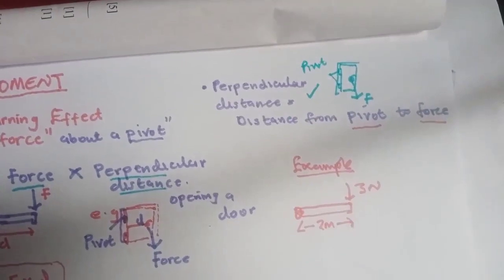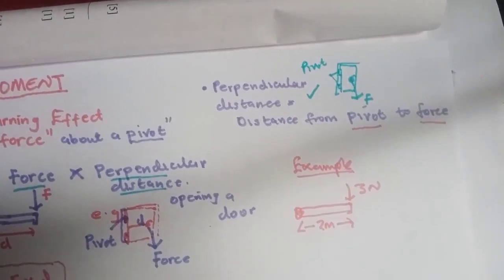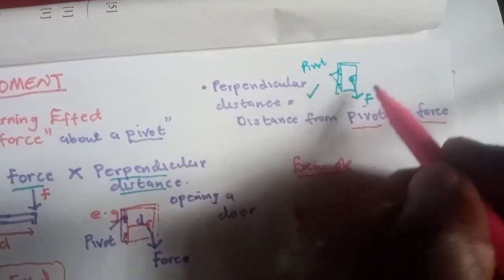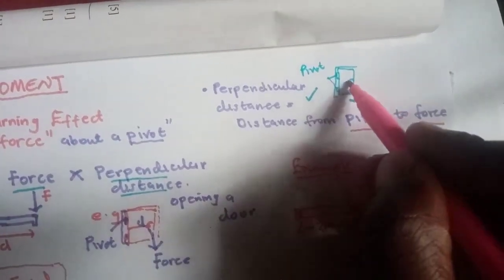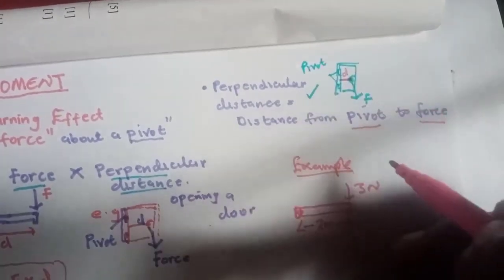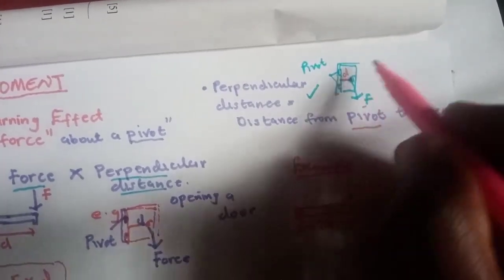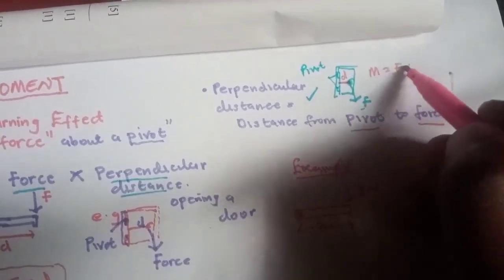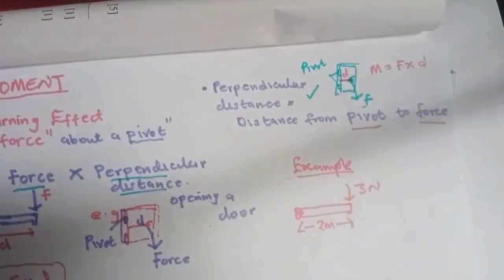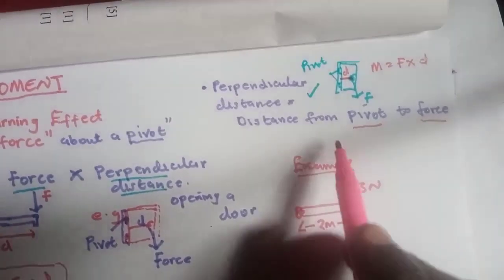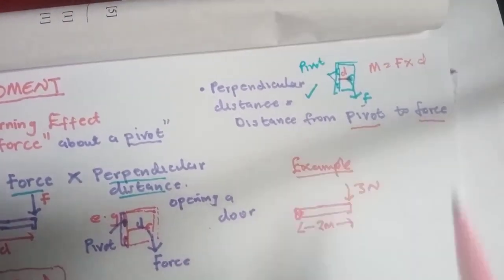Since that is where our pivot is, the perpendicular distance is the distance from where you are applying the force to where the pivot is. The moment will simply be force times distance, where the distance is from the pivot to the force.